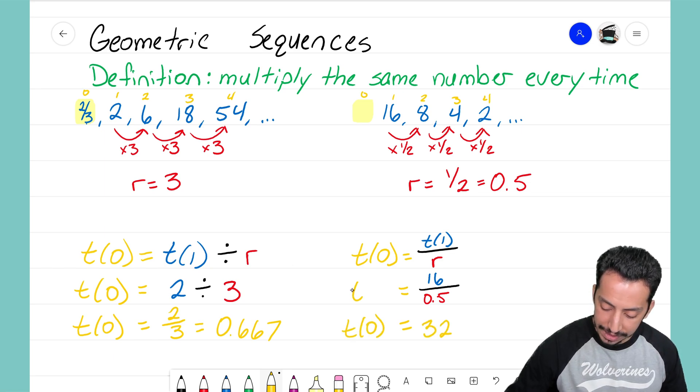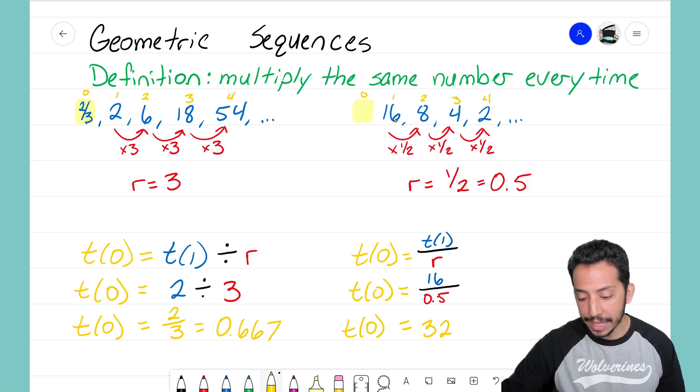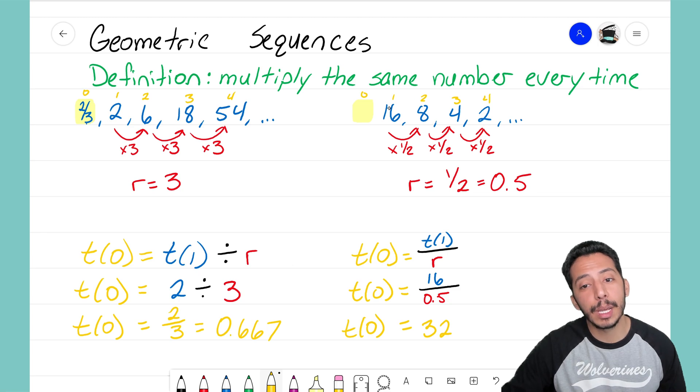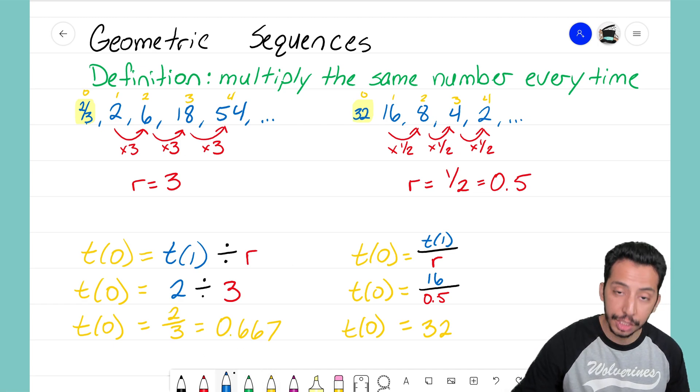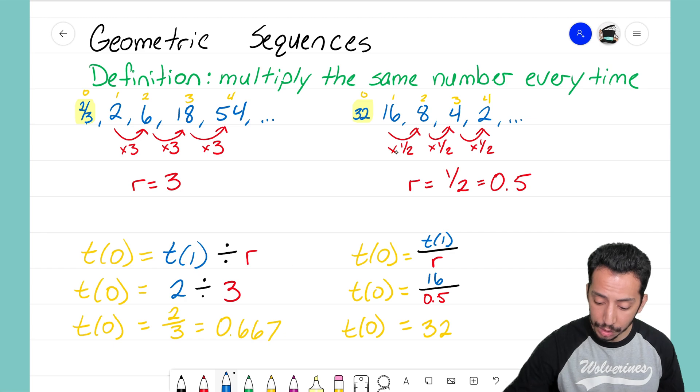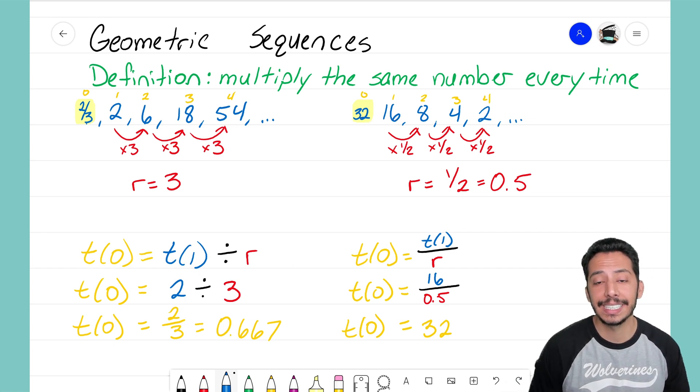Now take out your calculator and plug in 16 divided by 0.5, and you end up with a value of 32. This should make sense because as we move to the right with this sequence, the numbers are getting smaller - 16, 8, 4, 2. So as I move in the left direction, the number should be getting bigger, and it should be bigger than 16.